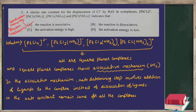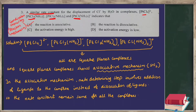The second question is again from coordination chemistry, specifically reaction mechanism. It asks: a similar rate constant for the displacement of Cl⁻ by H₂O in complexes PtCl₄²⁻, PtCl₃(NH₃)⁻, PtCl₂(NH₃)₂, and PtCl(NH₃)₃⁺ indicates what? So it is asking why a similar rate constant is observed when replacing Cl⁻ with H₂O across all these complexes.